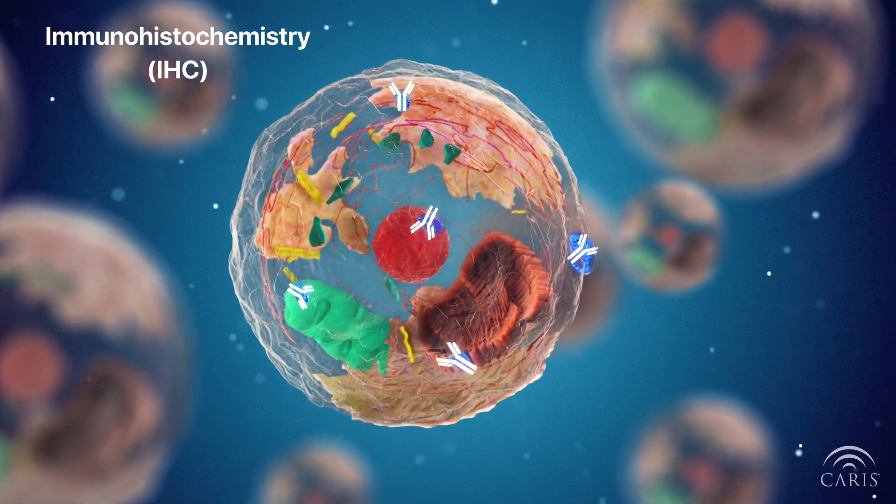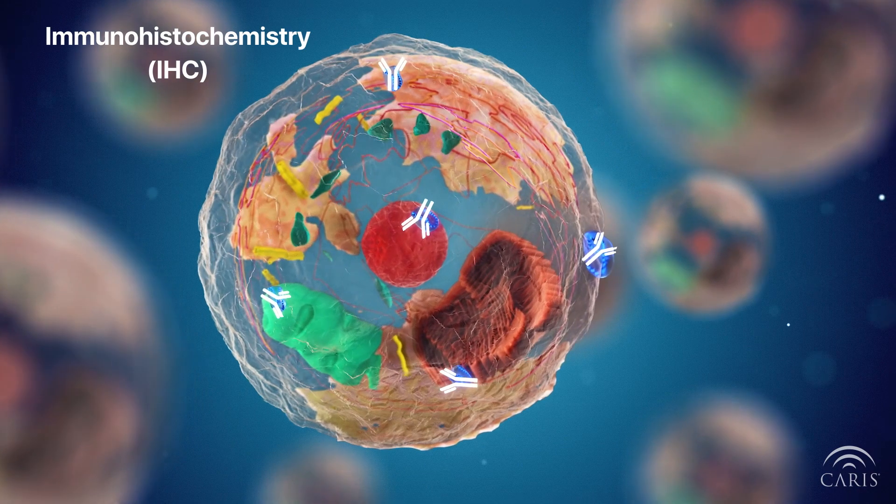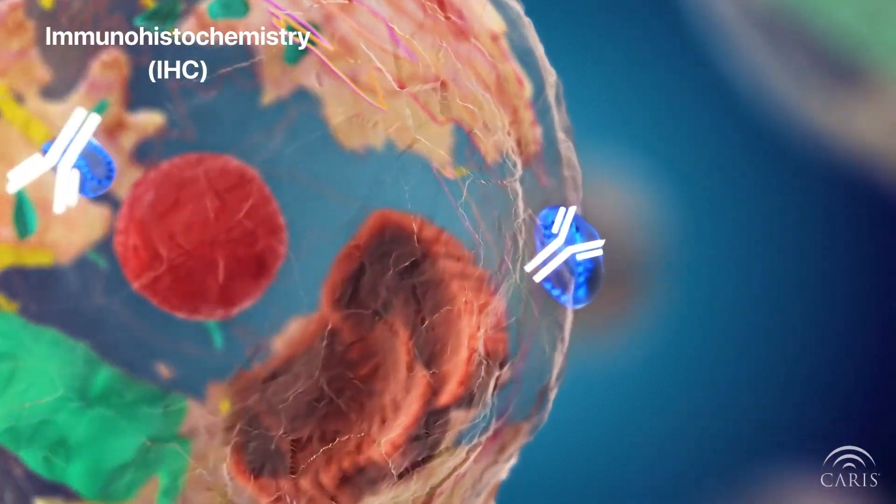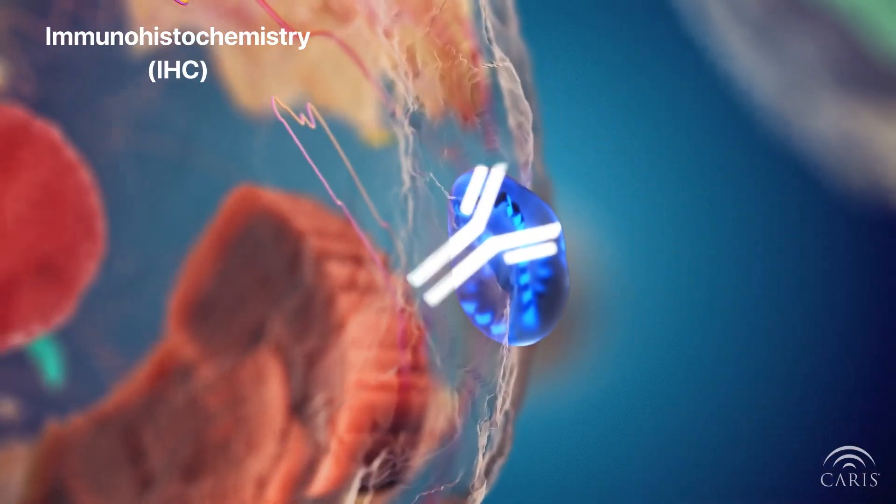Pathologists use these antibodies to stain specific proteins on the tissue biopsied from a tumor. The combination of different stains allows the pathologist to diagnose the tumor with a high degree of accuracy.